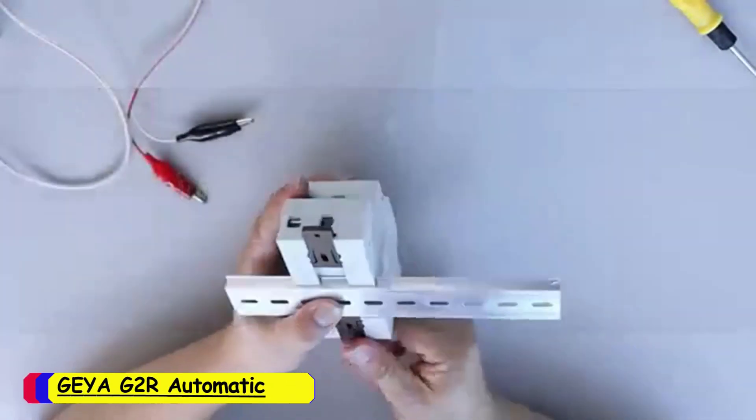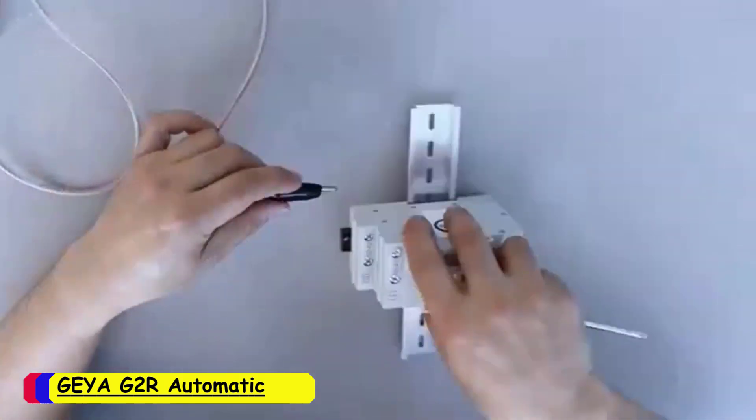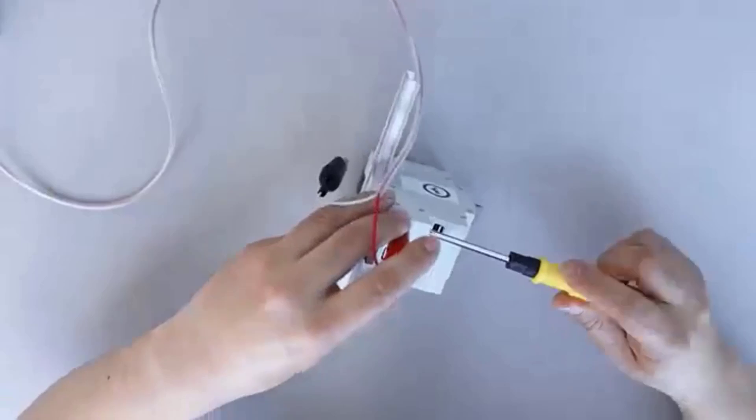Jag2R automatic transfer switch. The Jag2R is a mini-type circuit breaker, making it a space-saving option that's easy to install. Its robust construction ensures durability and long-term reliability.